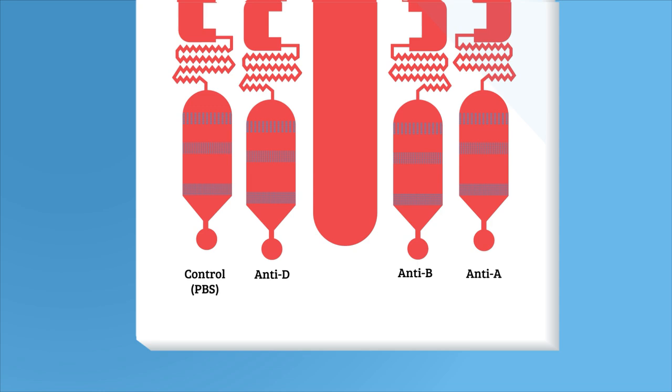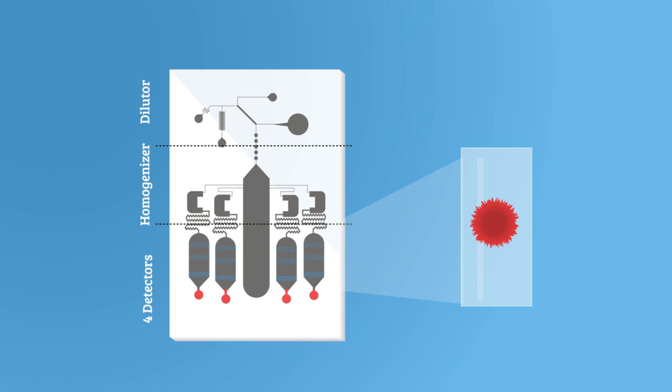Once the blood reacts with the reagents, it agglutinates and then collects in the agglutination slits, where a medical professional can use the naked eye to determine the blood type.